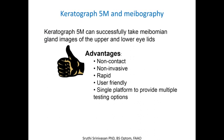The advantages of using Keratograph 5M for meibography images: you can successfully take images of upper and lower lids, and it is non-contact. Eversion of upper and lower eyelids is a routine part of an eye exam, so it's nothing unusual or different from your normal procedures. There is no poking, prodding, or touching — the device doesn't even come in contact with the ocular surface. It's totally non-contact, non-invasive, and capturing meibography images takes less than a minute per eye. It's very user-friendly, and the single device offers so many different testing options.